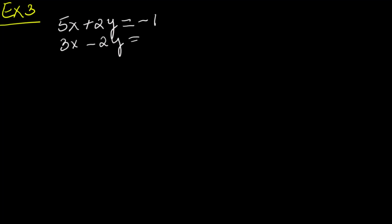Let's solve the next system using elimination. We're given equation 1: 5x plus 2y equals negative 1, and equation 2: 3x minus 2y equals 13. Look at the y terms — they're already opposites: plus 2y and minus 2y. That's perfect for elimination.